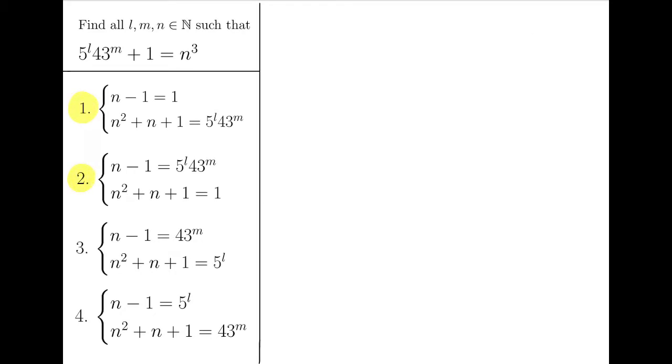So, let's take a look at the first two cases. When one of the terms, one of the expressions, will not take any prime factor. So, for the first case, N is 2, and so, N squared plus N plus 1 is 7. But, obviously, 7 is not the product of any prime power of 5 and prime power of 43. So, it's a contradiction here, and no solution.